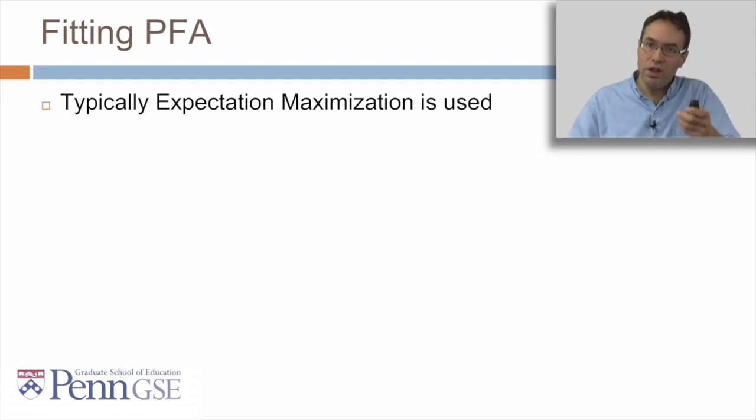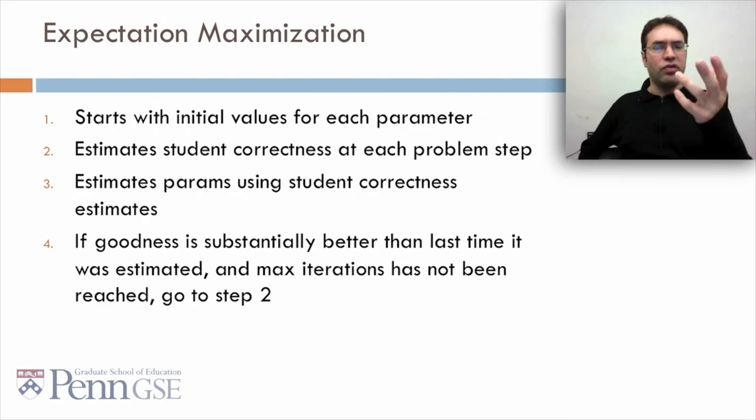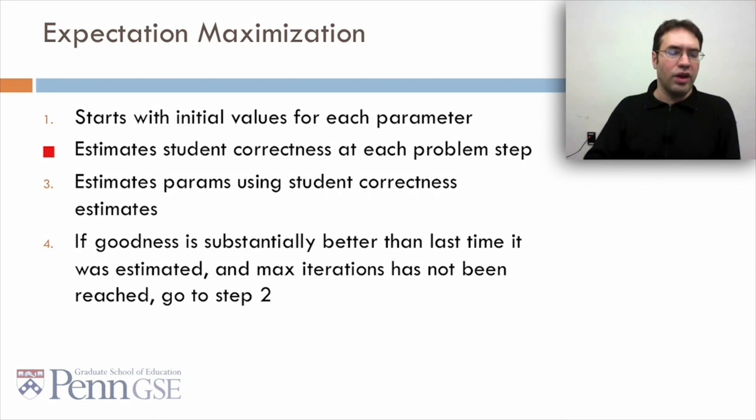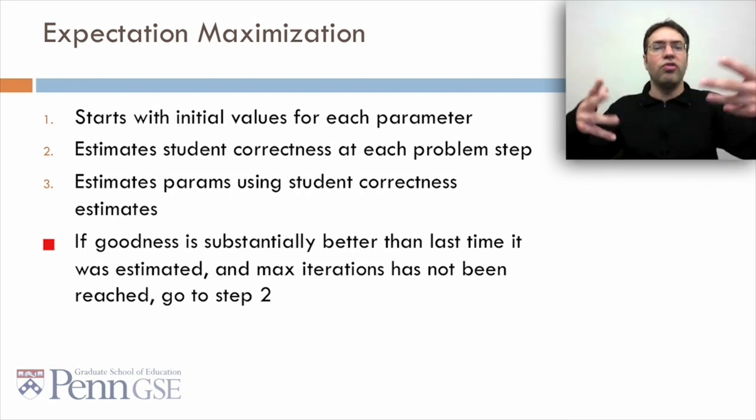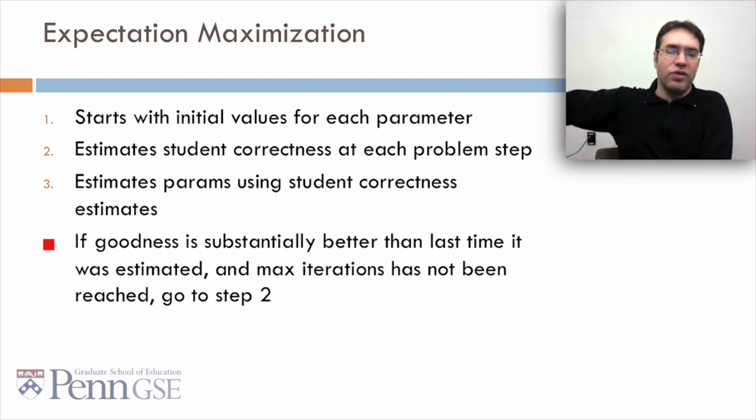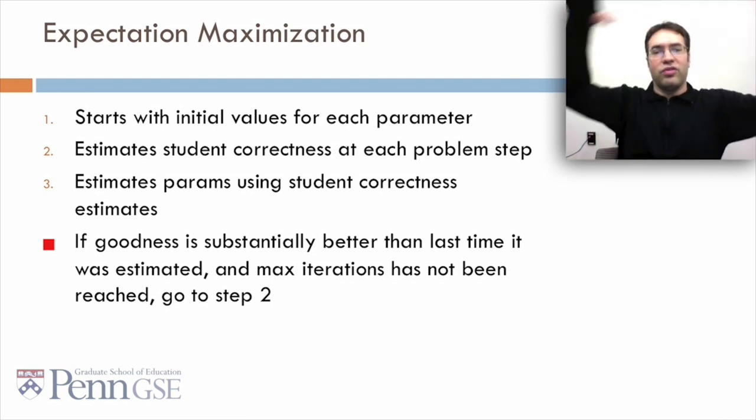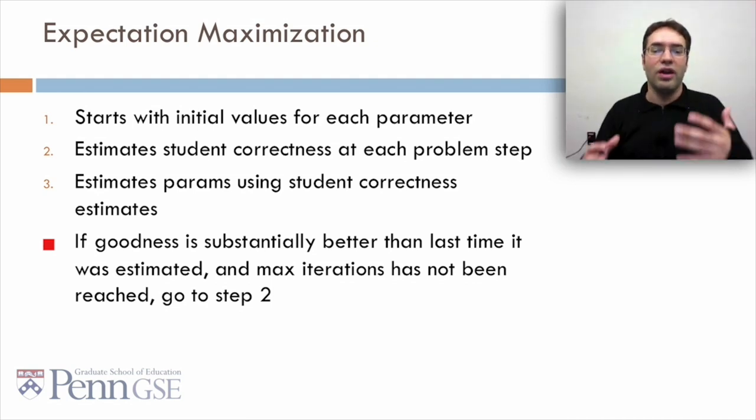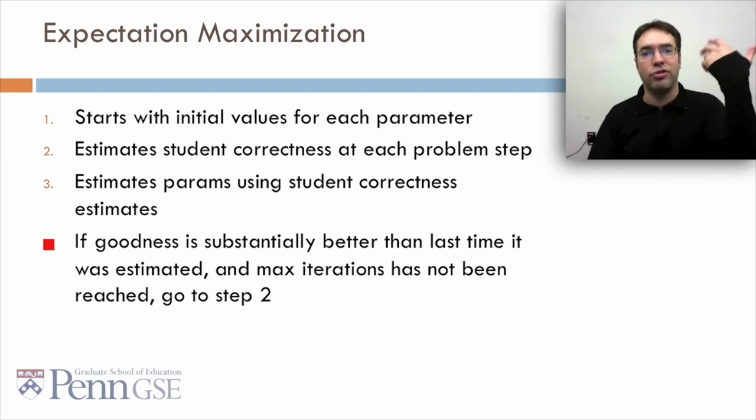So how do we fit PFA? Unlike BKT, where there are several alternatives that people consider, typically for PFA, just expectation maximization is used. First we start with initial values for each parameter. We then estimate student correctness at each problem step based on those values. We then re-estimate the parameters using the student correctness estimate, and if the goodness of the model is substantially better than the last time it was estimated, and we haven't reached the maximum number of iterations, we go back to step two. Keep going until you don't get any better.